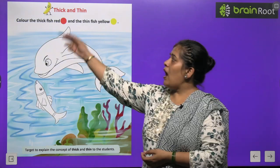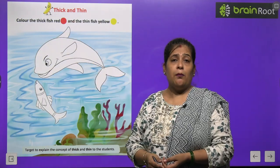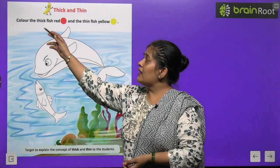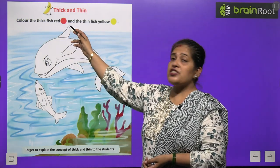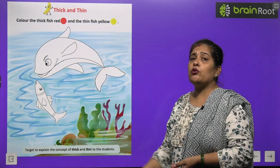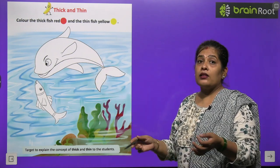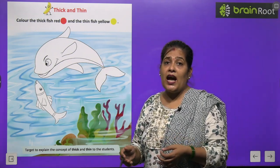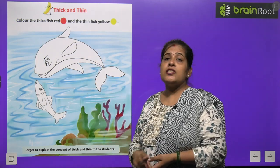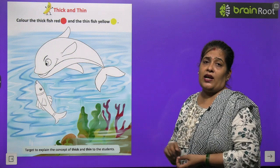Next, thick and thin. Thick کا مطلب ہوتا ہے بچوں موٹا اور thin کا مطلب ہوتا ہے پتلا. Color the thick fish red and the thin fish yellow. یہاں پہ آپ کو دو fish کی پچھر بنی ہوئی ہے — جونسی fish thick یعنی موٹی ہے اس میں red color کرنا ہے، اور جو fish پتلی ہے اس میں yellow color کرنا ہے.